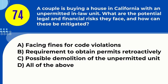Question 74. A couple is buying a house in California with an unpermitted in-law unit. What are the potential legal and financial risks they face, and how can these be mitigated? A. Facing fines for code violations B. Requirement to obtain permits retroactively C. Possible demolition of the unpermitted unit D. All of the above. Answer: D. All of the above. Explanation: Buying with an unpermitted unit can lead to fines, the need for retroactive permits, and potential demolition.